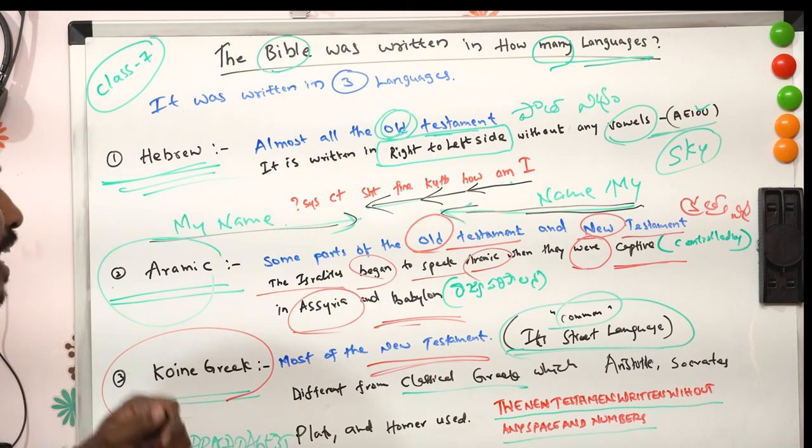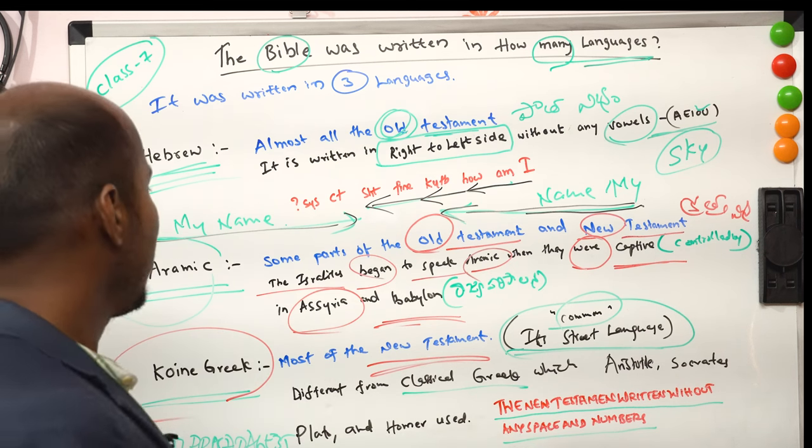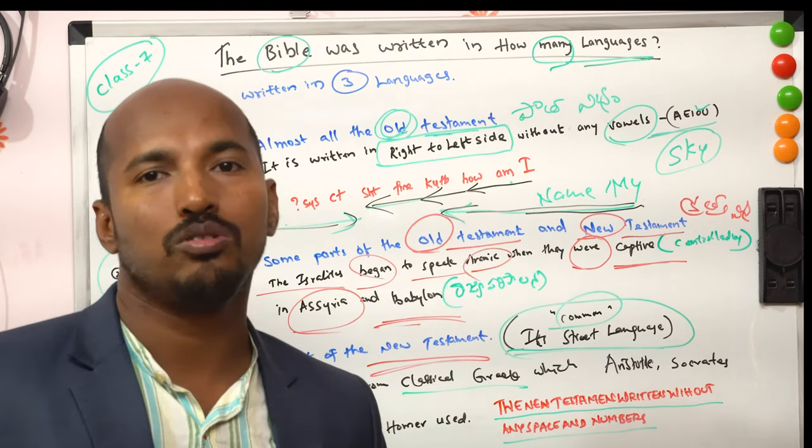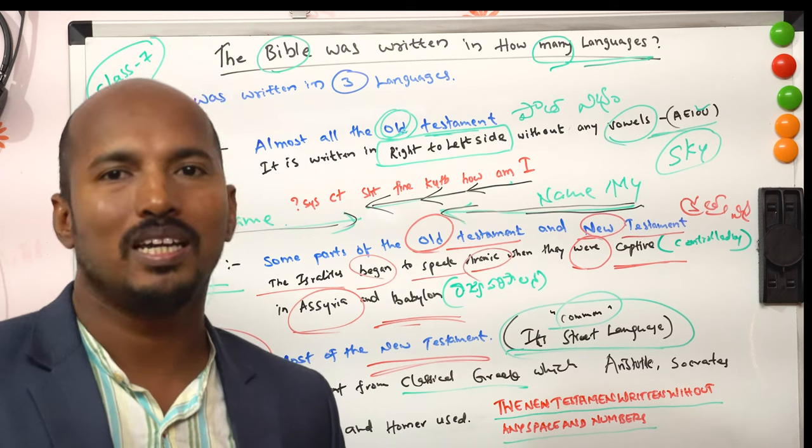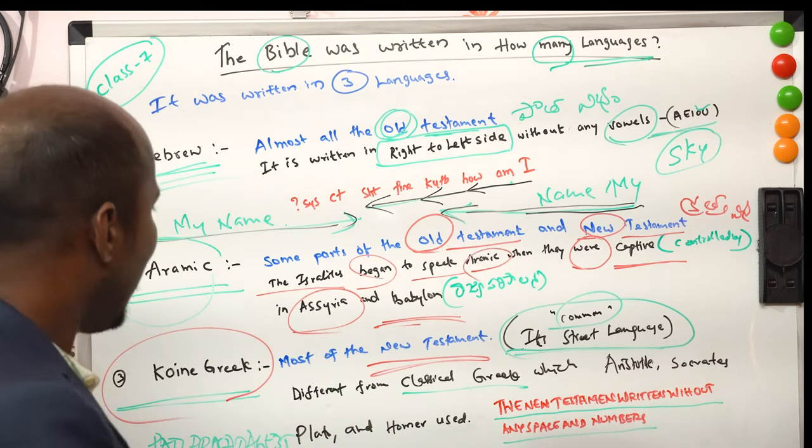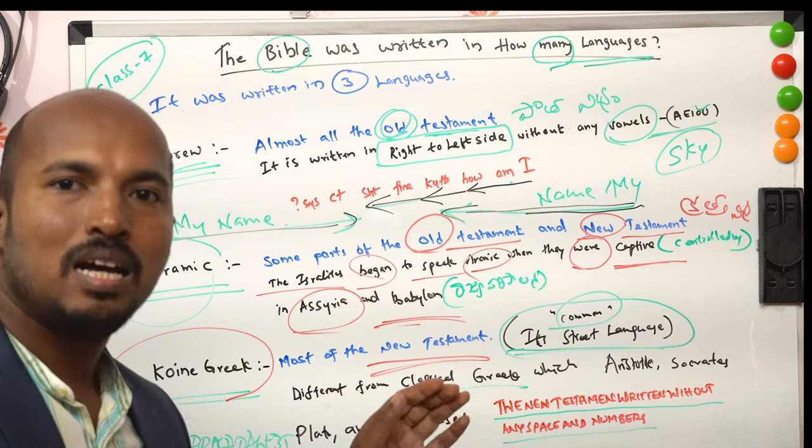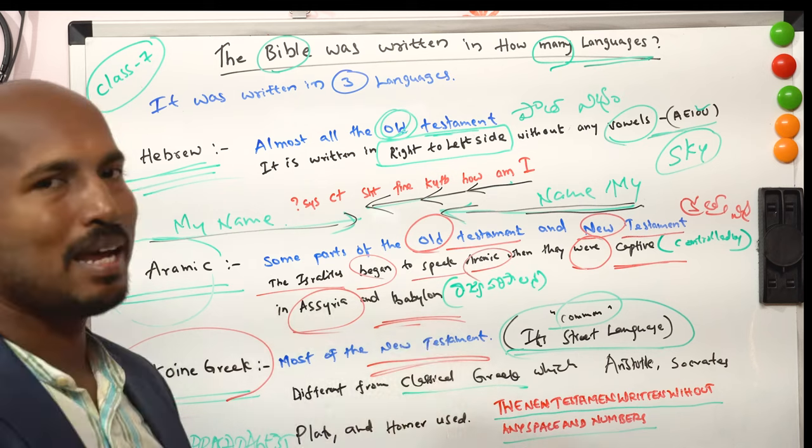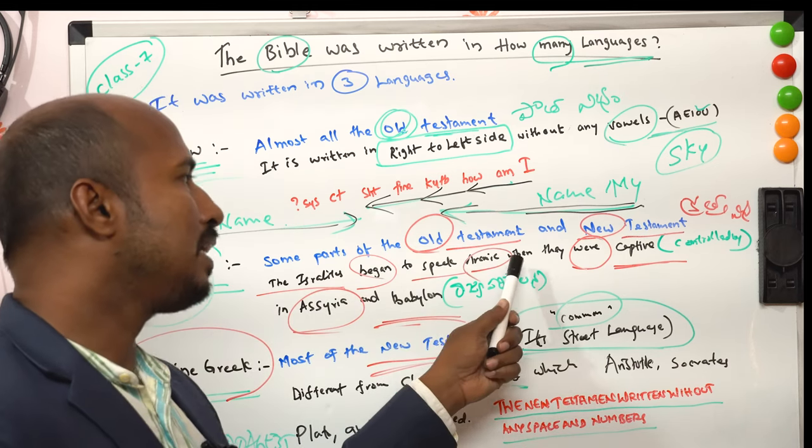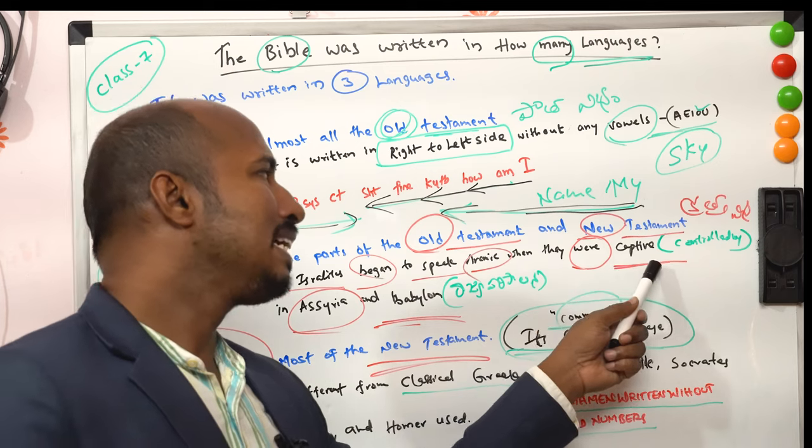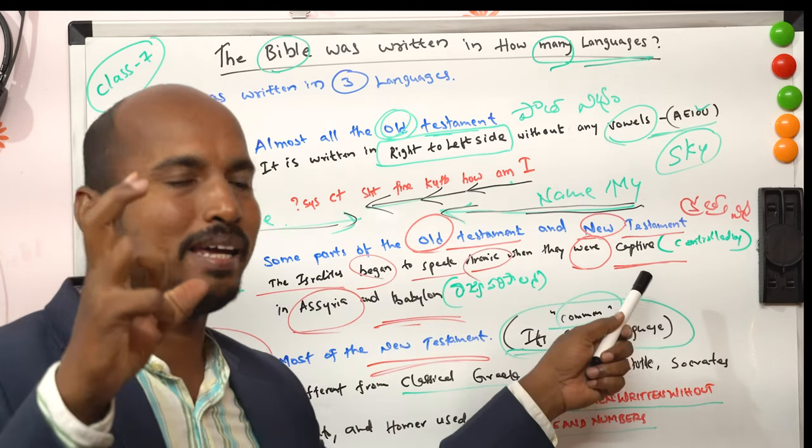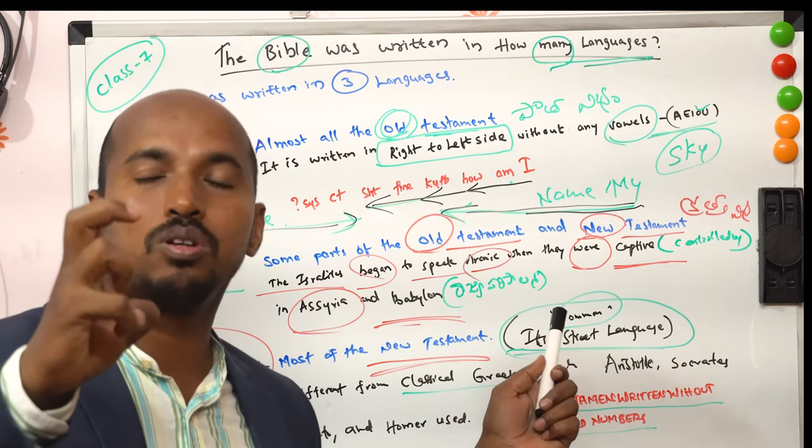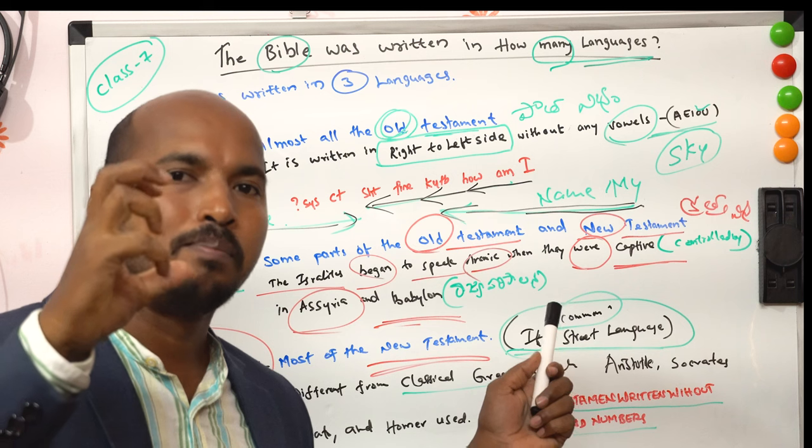Next language, the two languages, that is Aramaic. Aramaic is some parts of the Old Testament and New Testament. What is the speciality about Aramaic? The Israelites began to speak Aramaic. They started to speak Aramaic when they were captive and controlled by, ruled by Assyria and Babylon.